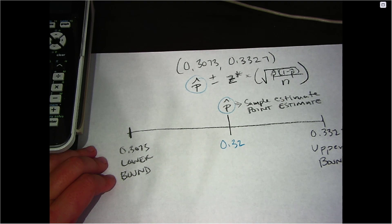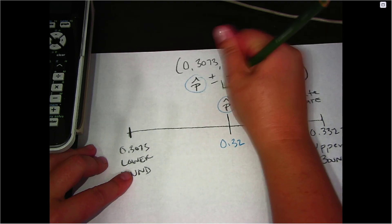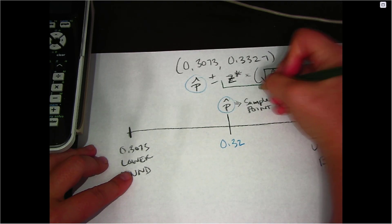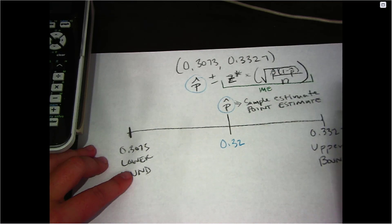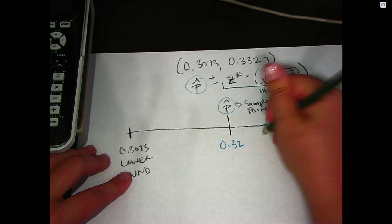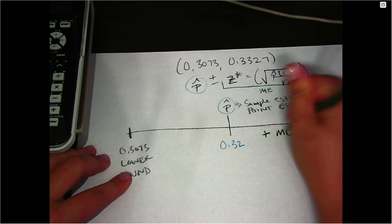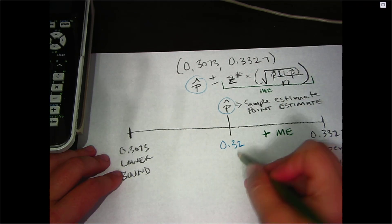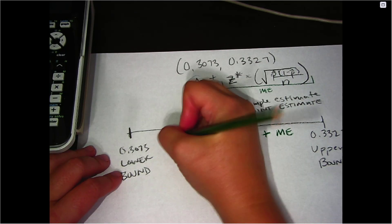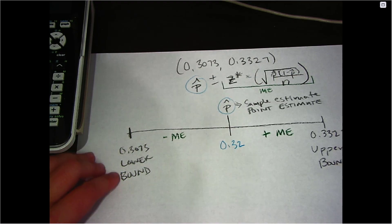Now, when you add and subtract, so this value here, you're adding and subtracting what's called the margin of error. So when you add your margin of error to p hat, it gets you to your upper bound. And when you subtract your margin of error from p hat, it gets you to your lower bound.